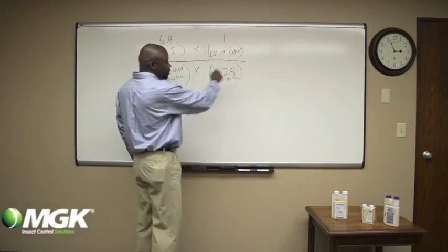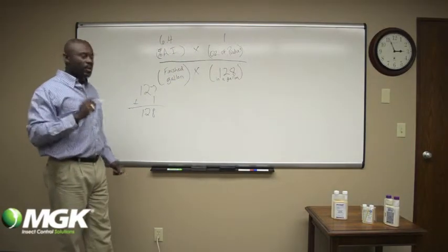Here it's just basically conversion. There's 128 fluid ounces in one gallon.